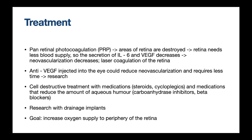If the intraocular pressure is not reduced by eye drops, other medications can also be given orally. Surgery is also possible to reduce the pressure, but in neovascular glaucoma the prognosis of this surgery is worse than in other types, due to the blood vessels in the field of operation. Another possibility is to destroy the aqueous humor production site partially to decrease production and so decrease the pressure. Of course, treatment of the underlying condition is also essential, which will lead to improvement of the condition.